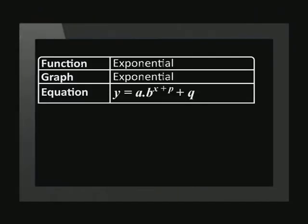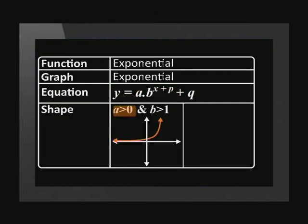Let's summarize the properties of the exponential graph. The standard equation of the exponential graph is y equals a times b to the power of x plus p plus q. If the value of a is positive and the value of b is greater than 1, the graph lies above the asymptote and is an increasing function. But if the value of b lies between 0 and 1, then the graph is decreasing but still lies above the asymptote.